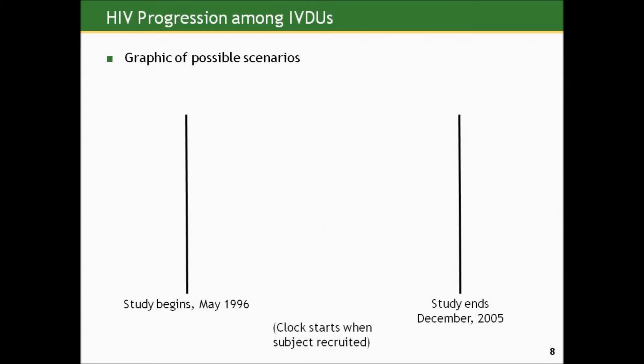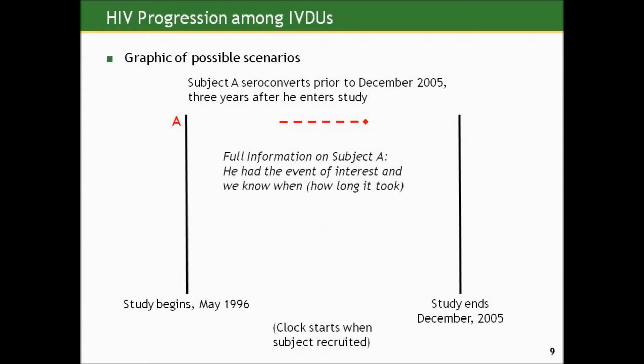Let's look at a graphic of some possible scenarios using the calendar-level clock for the study, which begins in May 1996 and ends in December 2005. The survival analysis clock starts when the subject is recruited and enrolled. Suppose subject A enters the study and seroconverts three years after entry, prior to December 2005. We know he actually had the event of interest, we know how long it took since he enrolled — three years. We have a full piece of information on subject A: we know he had the event and how long it took.